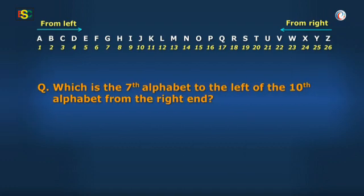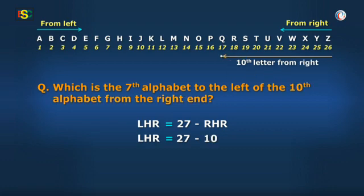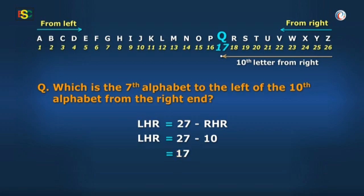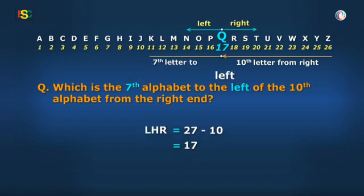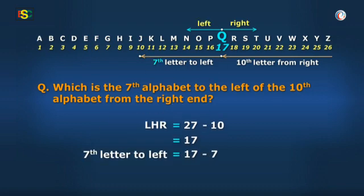Baba, we will have to move from right to left in the series to get desired answer. Yes, and 10th letter from right end must be 27 minus 10 equal to 17 and 17th letter is Q. Then, going 7 steps towards left and as per my left, I will move towards letter A. So, 17 minus 7 is equal to 10 and 10th letter is J. So, J is 7th letter from left of 10th letter from right end in above series.